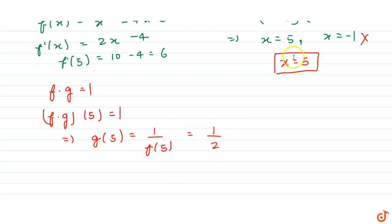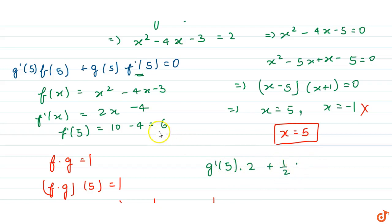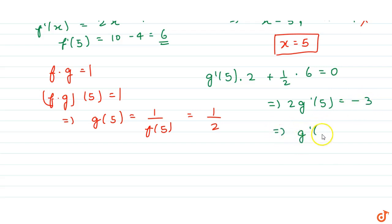Substituting these values into the equation: g' of 5 into f of 5, which is 2, plus g of 5, which is 1 by 2, into f' of 5, which is 6, equals 0. So 2 times g' of 5 plus 3 equals 0, giving 2 times g' of 5 equals minus 3, and therefore g' of 5 equals minus 3 by 2. This is the required answer.